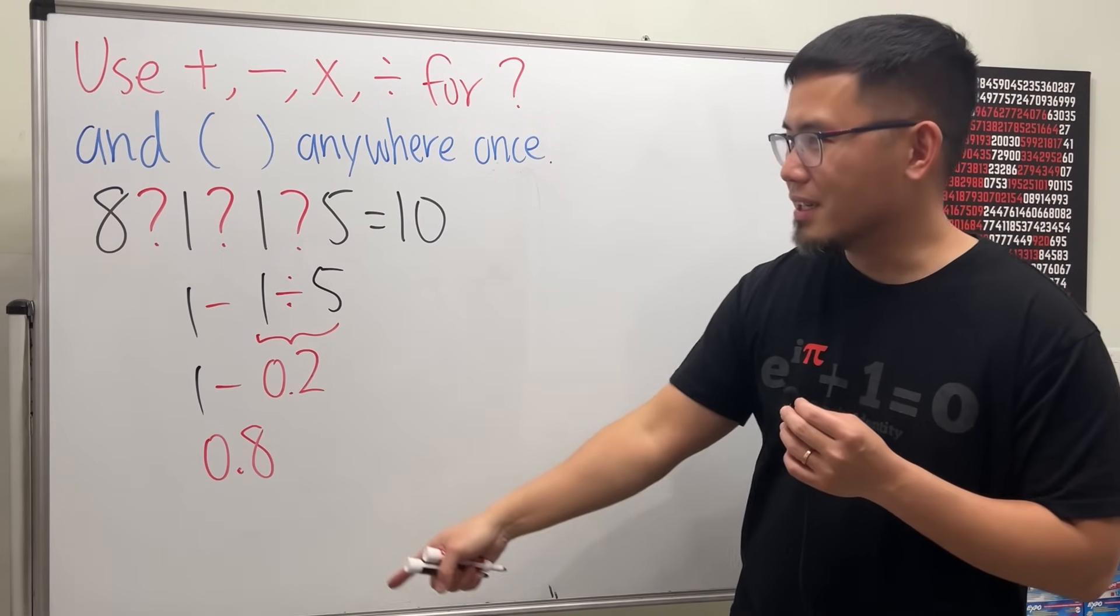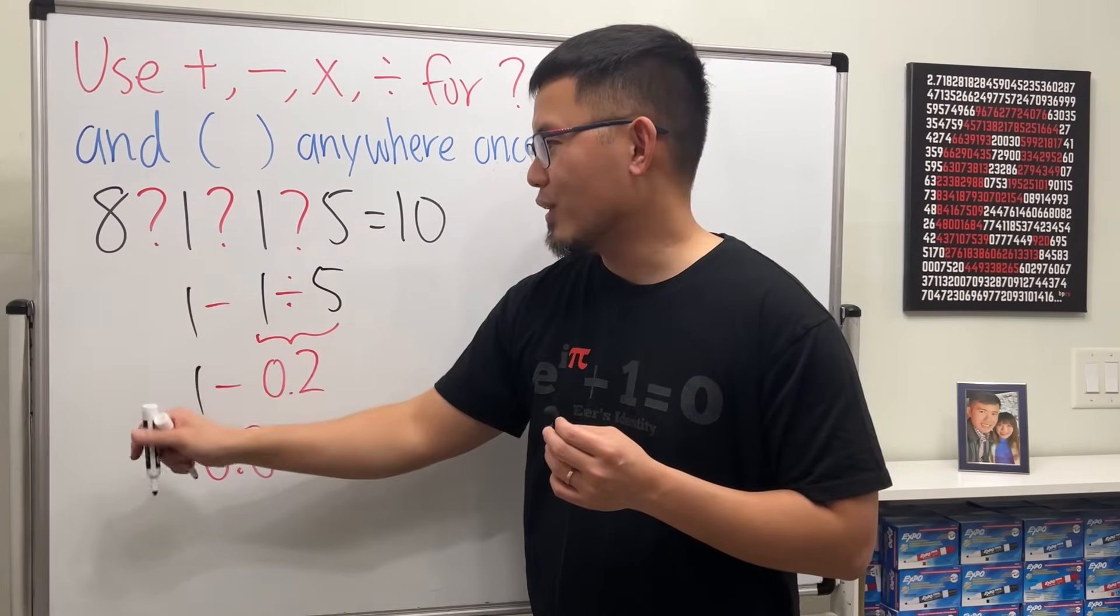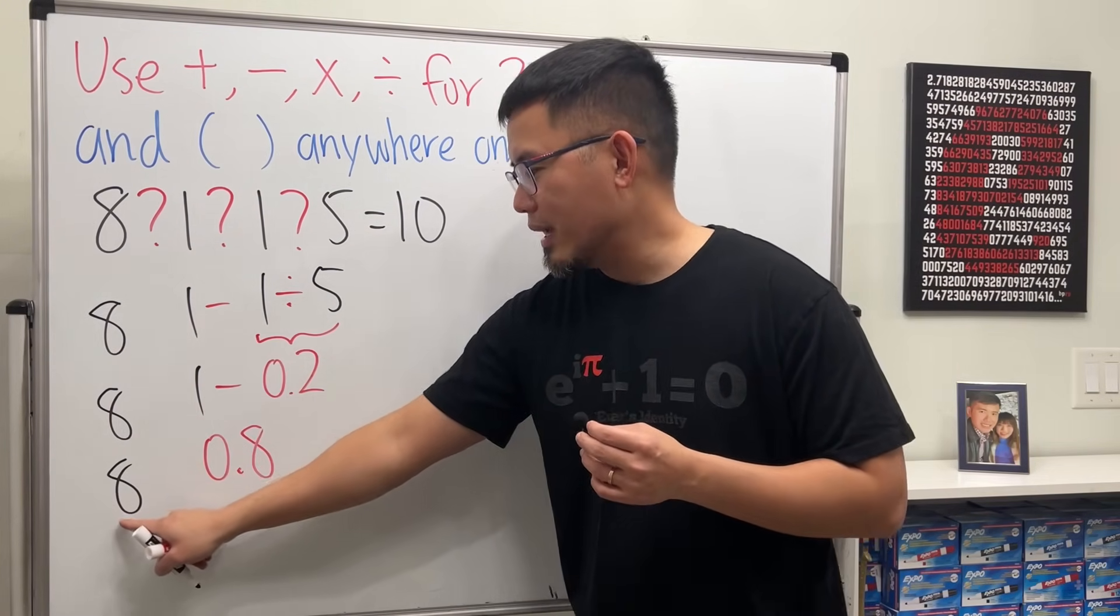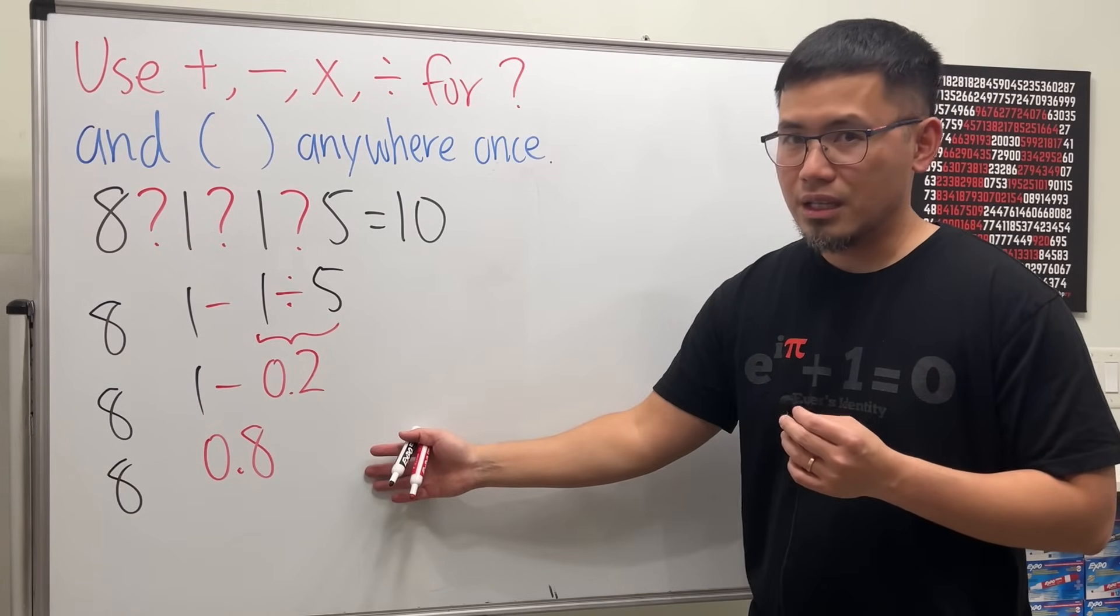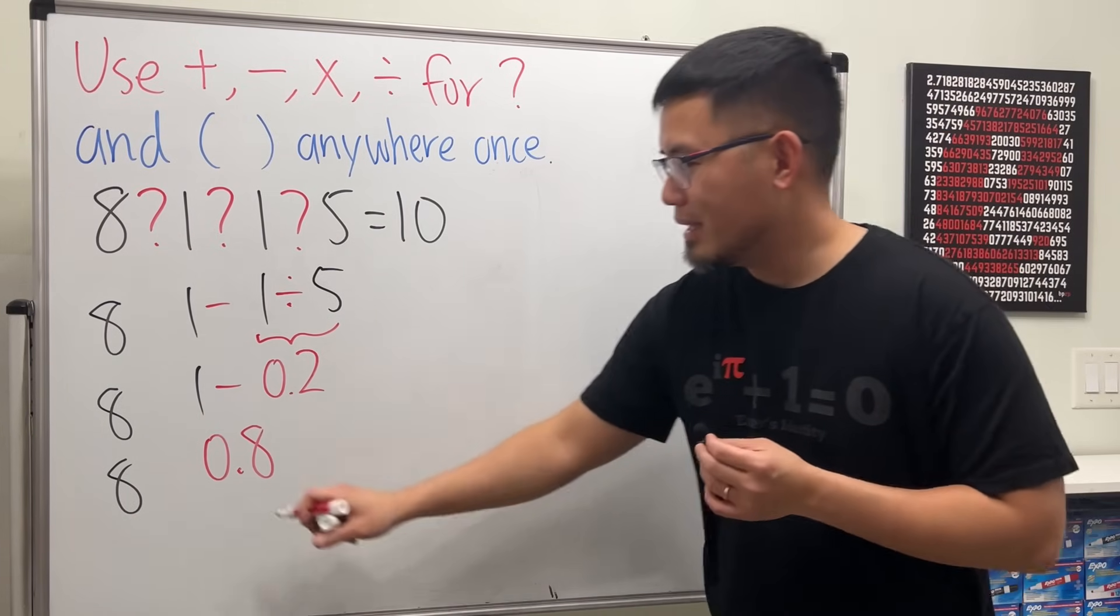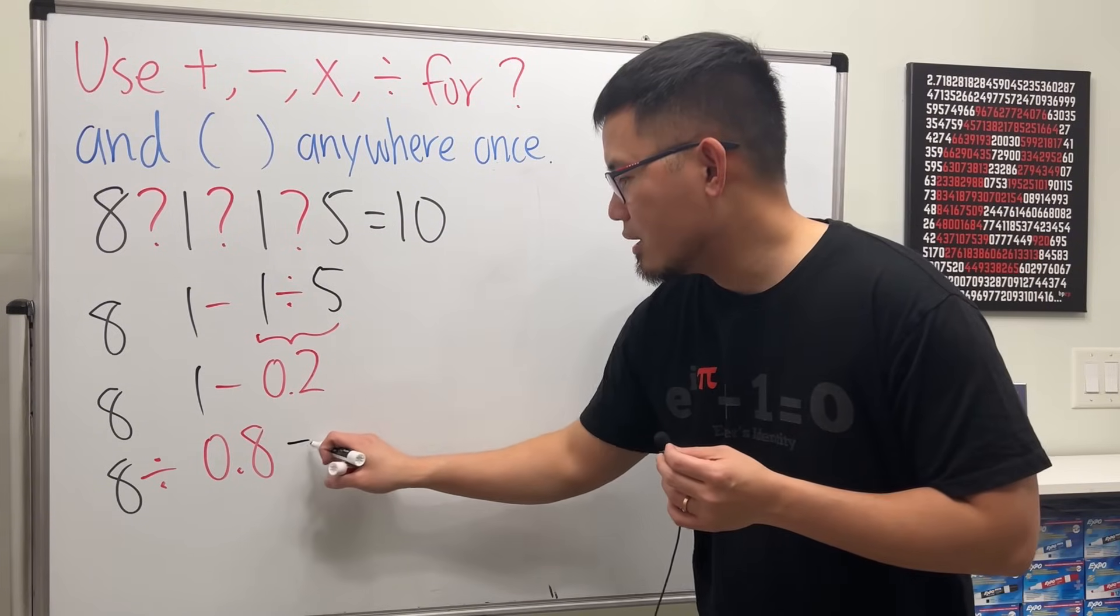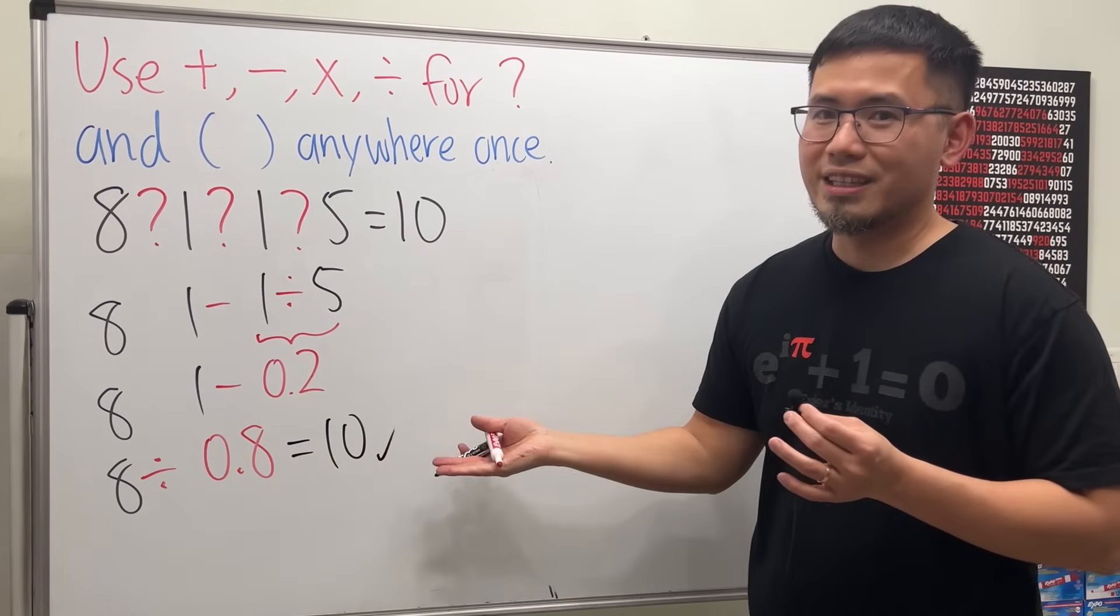Why is this so nice? Because we still have one more 8 in the front. So 8, 8, 8. How can we go from 8 and 0.8 and get 10? All we have to do is just simply divide. 8 divided by 0.8, this right here, will give us 10. Just like that.